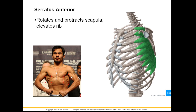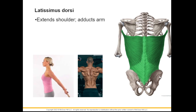We also have the serratus anterior on the sides. Their job is to elevate the ribs, especially during inhalation — it is very important for breathing. On your back we have the latissimus dorsi, a triangular muscle at the back — bodybuilders call it the lats. Their job is to extend the shoulders and adduct the arm because they are attached to the arm as well, so once it contracts you pull your arms towards the body.